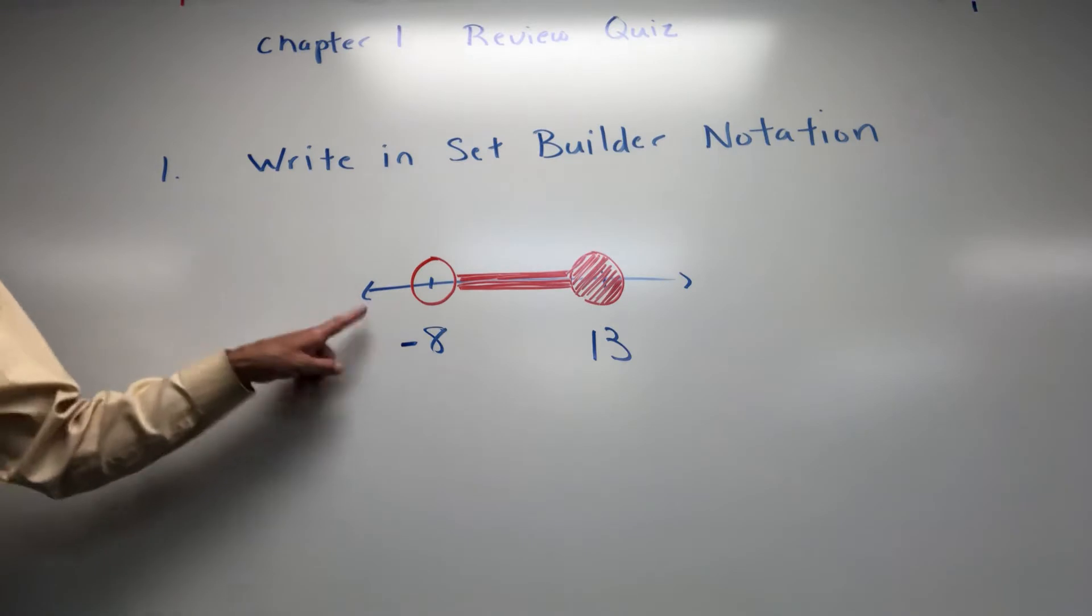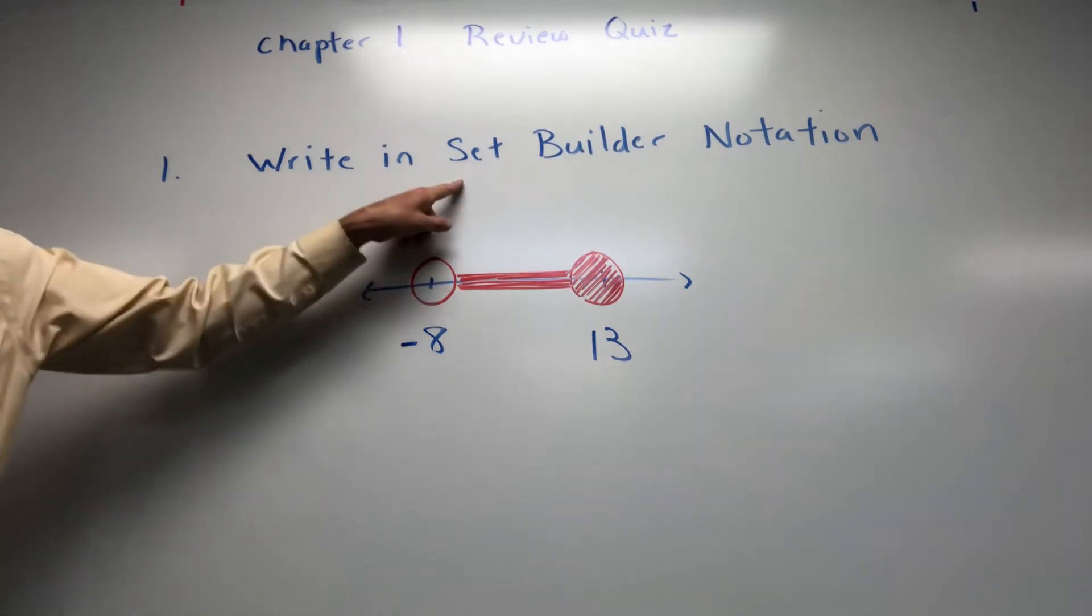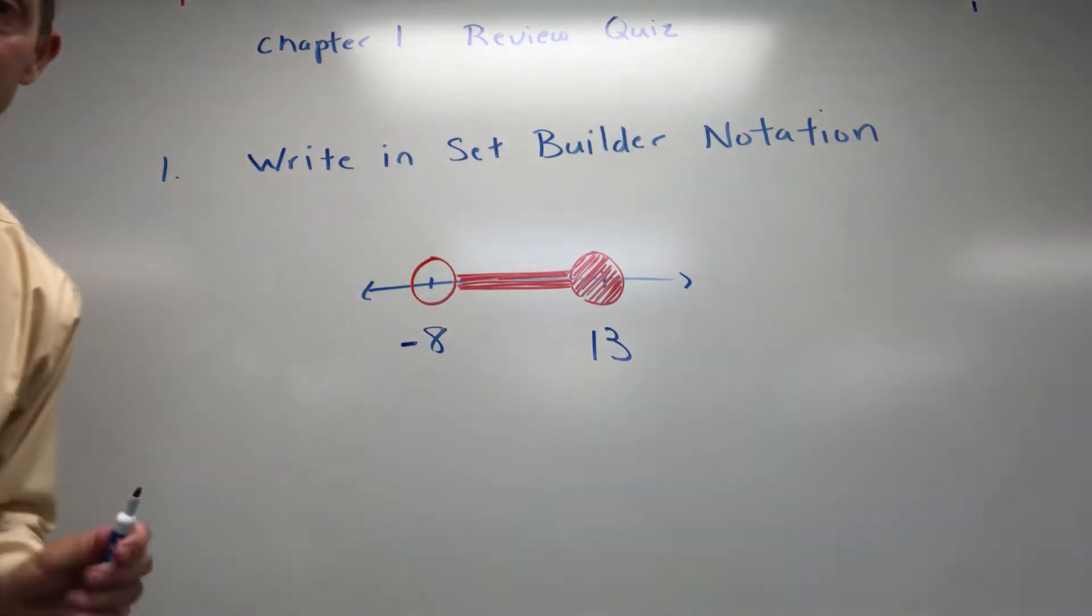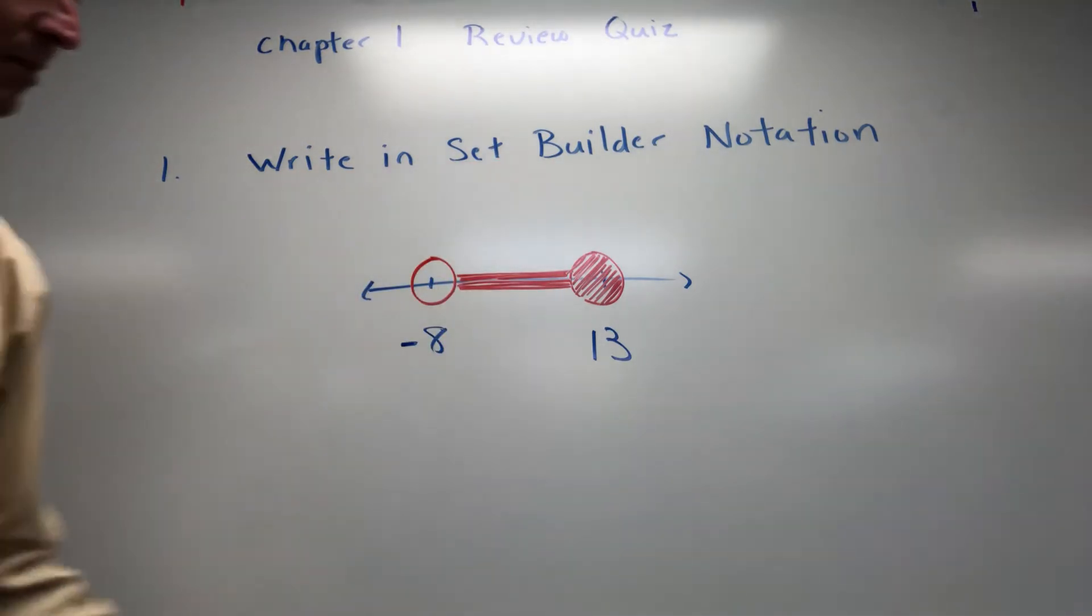So here's your first question. I give you this line graph. You've got to put it in set builder notation, so not interval. Make sure you go set builder. There's question one of the five questions.